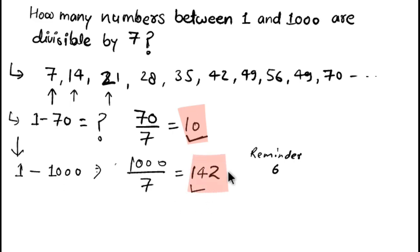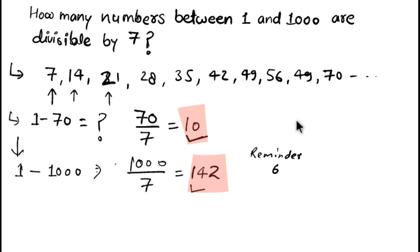If you have any difficulty understanding how I found the remainder six, you can divide one thousand by seven using the conventional method and check the last remainder — you'll get six. So I can easily confirm the required count of numbers divisible by seven between one and one thousand is 142.